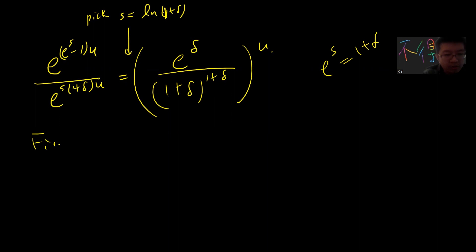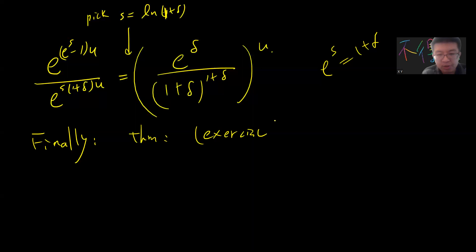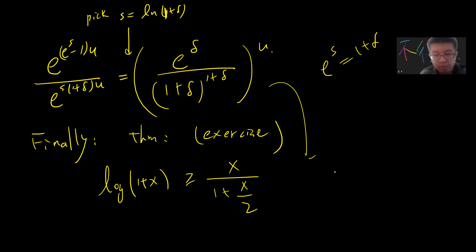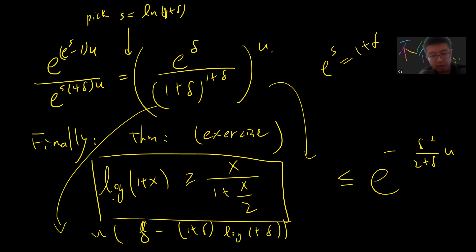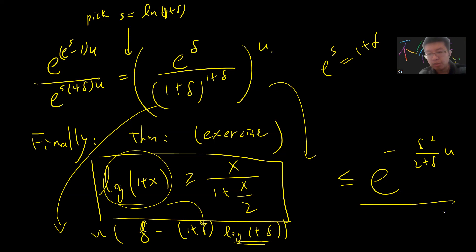Finally, there is a lemma — I will leave it as an exercise — that log(1 + x) ≥ x / (1 + x/2). Using this, the bound simplifies to exp(−δ²μ / (2 + δ)). The reason is: if you take the log of the bound, you get μδ − (1 + δ)log(1 + δ), and you use this inequality to replace the log term. After some computation, you can prove the upper tail result.